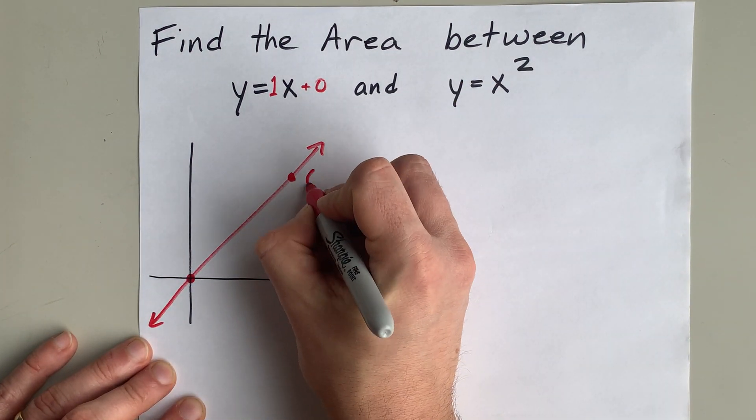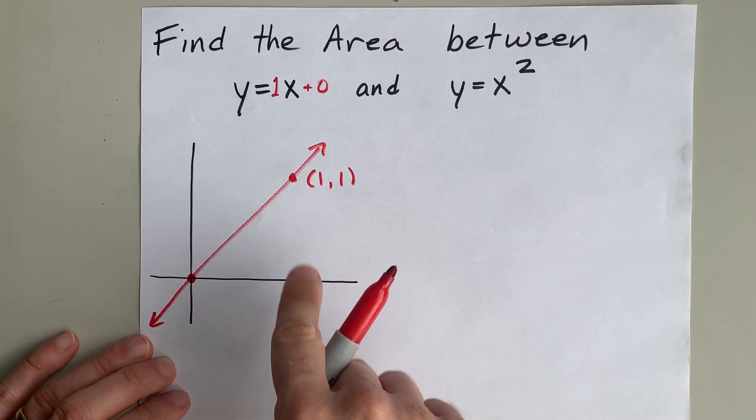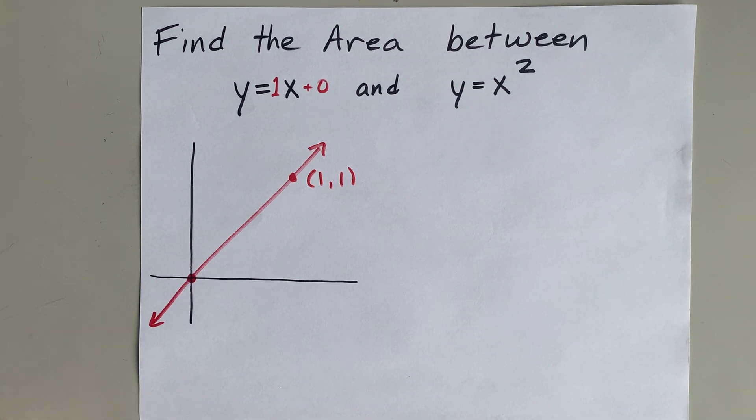Now, I'm going to put a point here at 1, 1. That's over 1, up 1. And I'm choosing that very specifically because I know that it's also on y equals x squared.